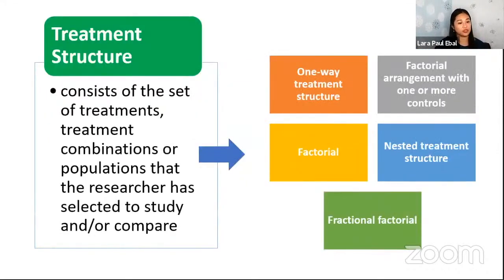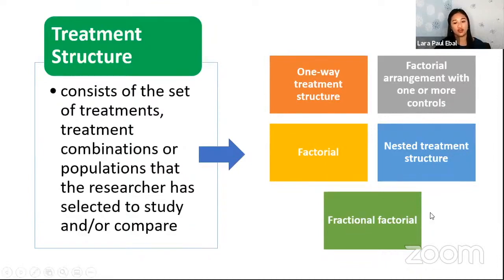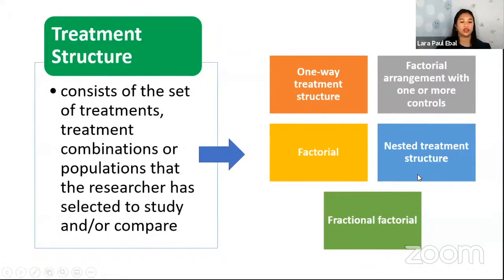Treatment structure consists of the set of treatments, treatment combinations, or populations that the researcher has selected to study and/or compare. Possible treatment structures include: one-way treatment structure, factorial, factorial arrangement with one or more controls, nested treatment structure, and fractional factorial. We will focus on the one-way treatment structure, but once you understand it, you can proceed to learn the others — factorial, fractional factorial, or nested.